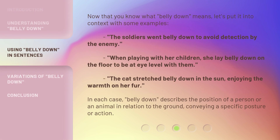Now that you know what belly down means, let's put it into context with some examples. The soldiers went belly down to avoid detection by the enemy. When playing with her children, she lay belly down on the floor to be at eye level with them. The cat stretched belly down in the sun, enjoying the warmth on her fur. In each case, belly down describes the position of a person or an animal in relation to the ground, conveying a specific posture or action.